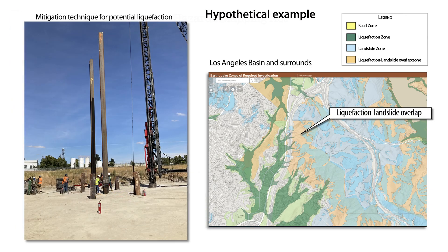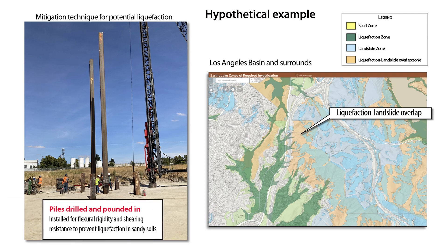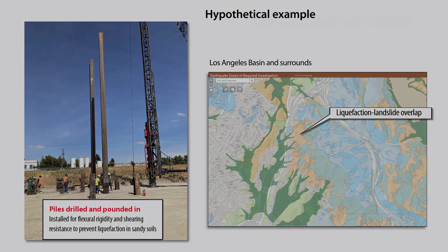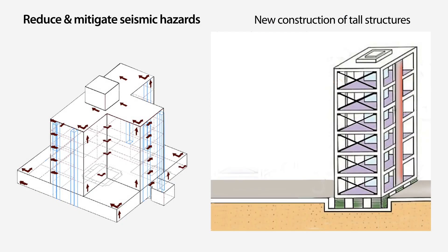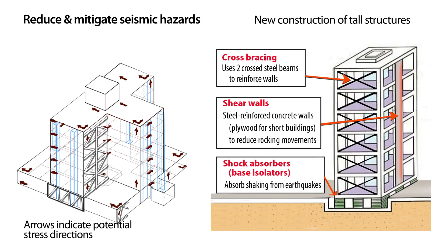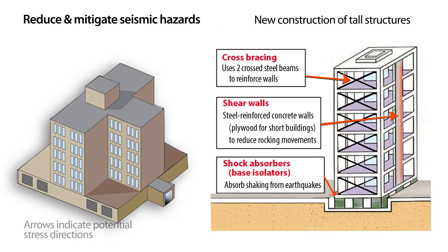If CGS maps an area where there could be specific types of seismic hazards, additional investigations must be conducted within those zones prior to development. If a hazard is found at a specific site, that hazard must be mitigated for development to continue. These maps are not intended to prevent construction of new housing, commercial, industrial, or other development projects. Instead, they provide authoritative, science-based information that enables risk-informed planning and seismically resilient development.